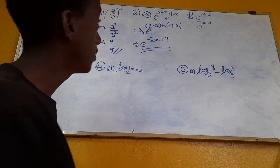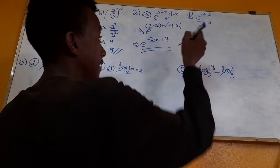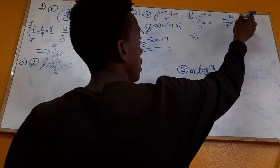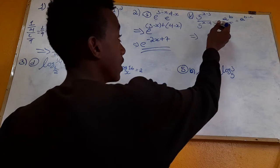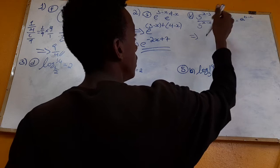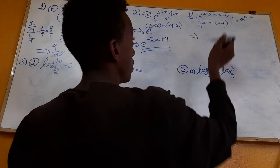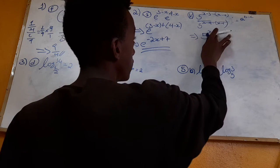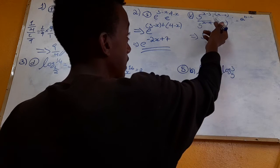Next question: 5 to the power of (x minus 3) over 5 to the power of (x minus 4). Using the rule: e to the power of B over e to the power of C equals e to the power of (B minus C). So we get (x minus 3) minus (x minus 4), which simplifies.